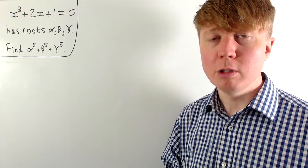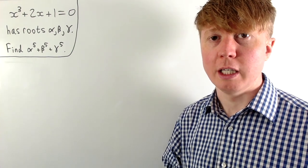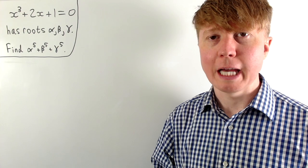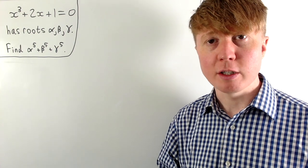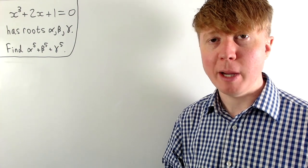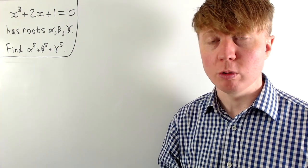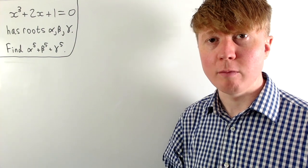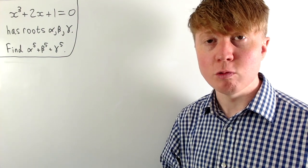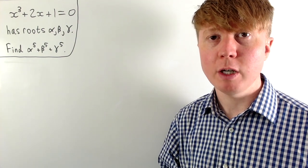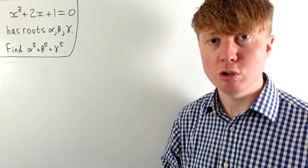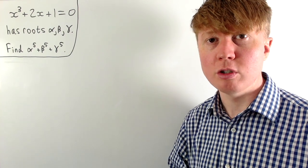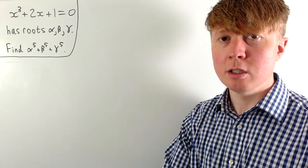We're going to solve this problem where we're given a cubic with roots alpha, beta, and gamma, and we need to find the sum of the fifth powers of these roots. Instead of actually solving the cubic and raising each root to the power of five, we'll take shortcuts involving an approach related to Vieta's formulas.